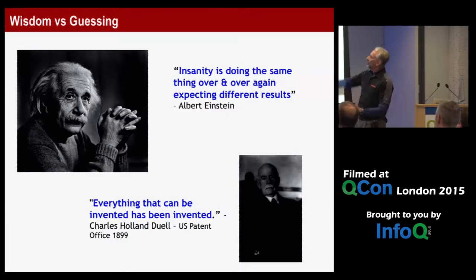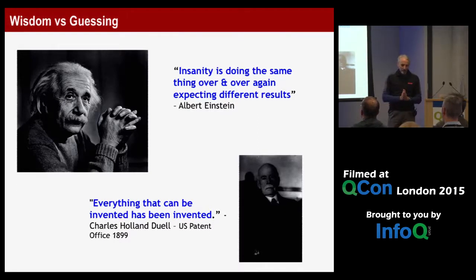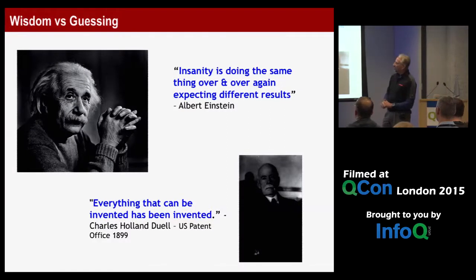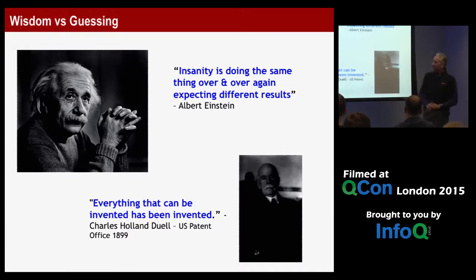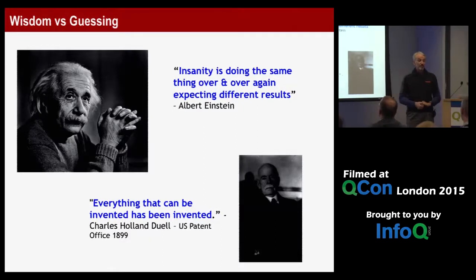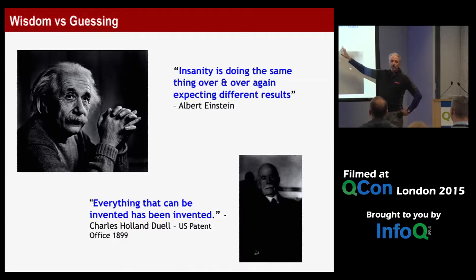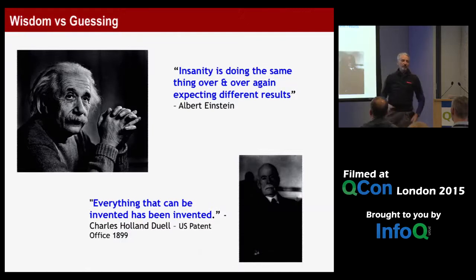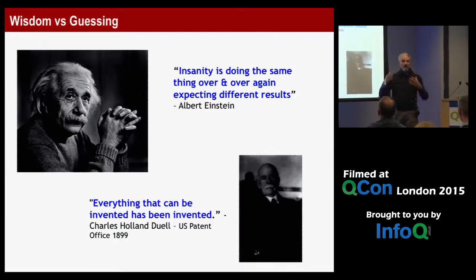Let's start with a bit of philosophy. Insanity is doing the same thing over and over again expecting a different result. Another quote: 'Everything that can be invented has been invented' — Charles Jewell from the US Patent Office in 1899. Obviously he was right. The point is: if we're going to tackle high load processing, we might have to do things differently and think outside the box.